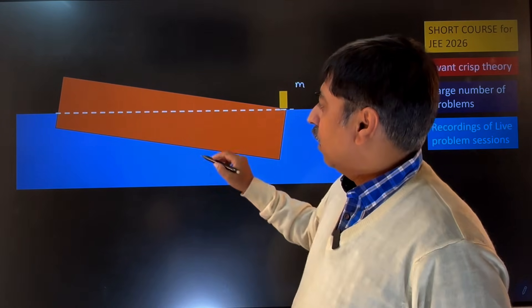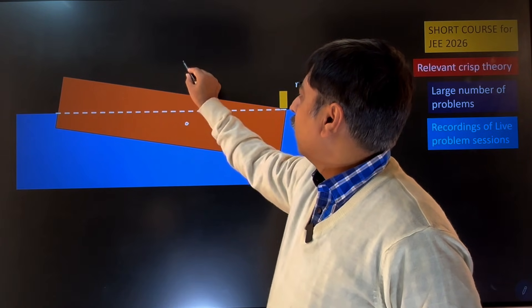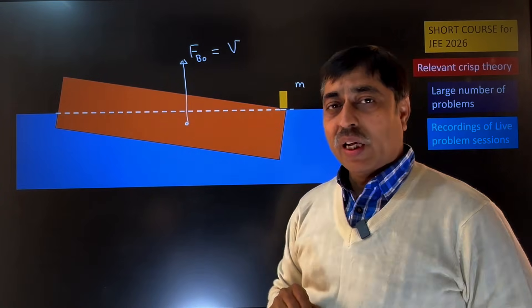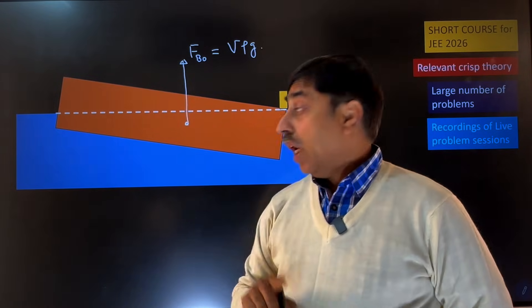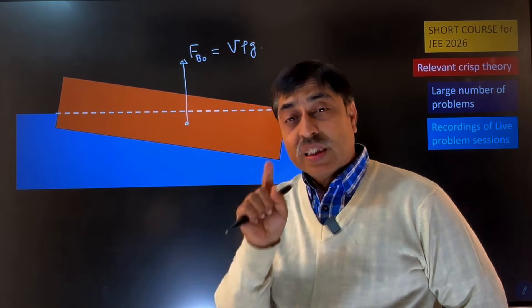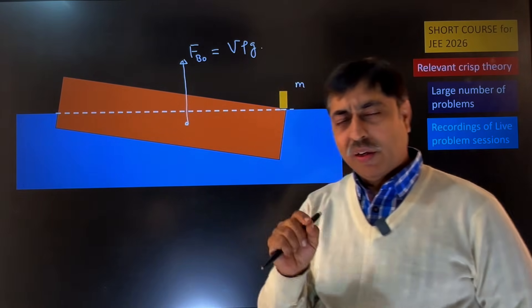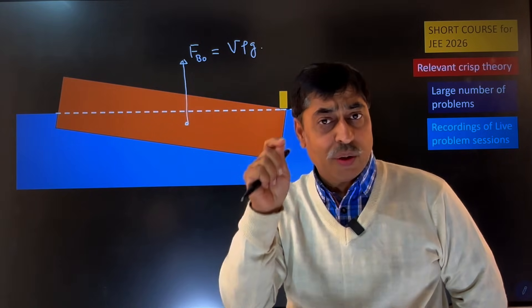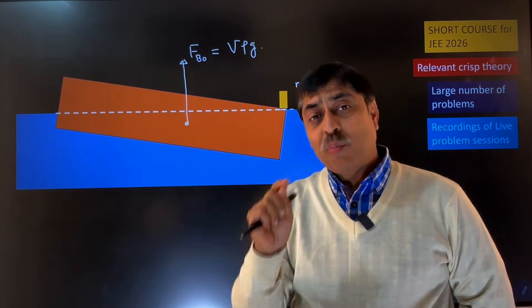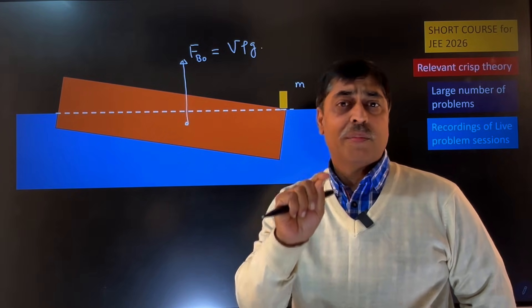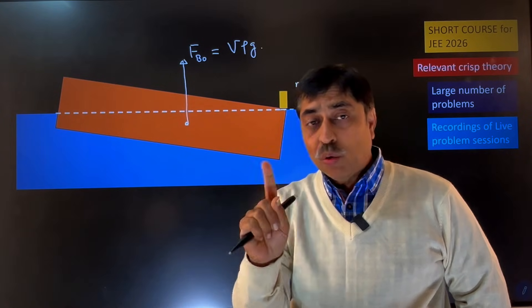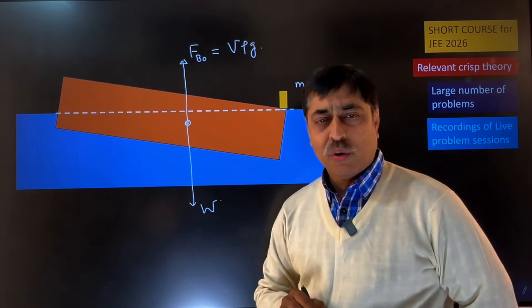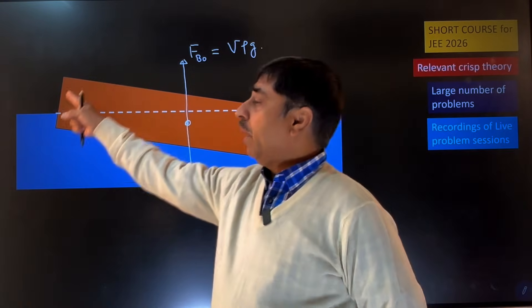If the complete bar is submerged, the buoyancy force F_B0 will be equal to V·ρ·g — the volume of the entire bar times the density of water times g. This force will definitely act at the geometrical center, which is the center of mass of the bar since the bar is uniform. But the fact of the matter is that the complete bar is not submerged; this triangular part is outside water.